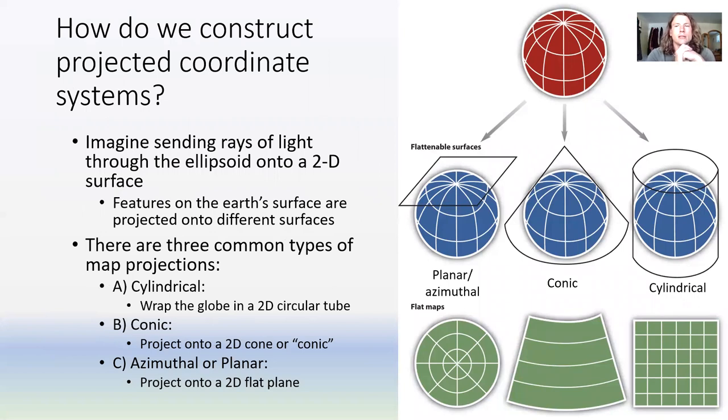In addition to categorizing them based on how they deform the Earth, we can talk about the three different ways that we construct these projections. If you think back to that sending a ray of light through the Earth example, the example I gave was just a flat surface, a planar azimuthal projection. There's three types of map projections: cylindrical, conic, and azimuthal, also known as planar.